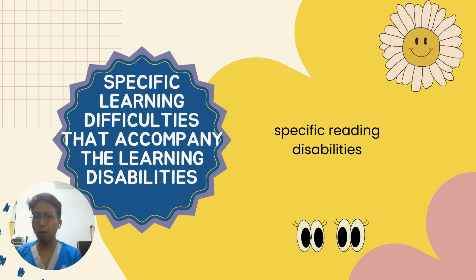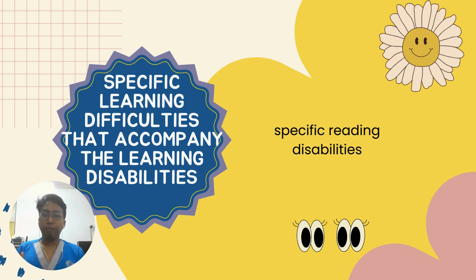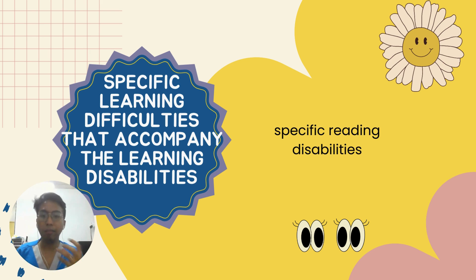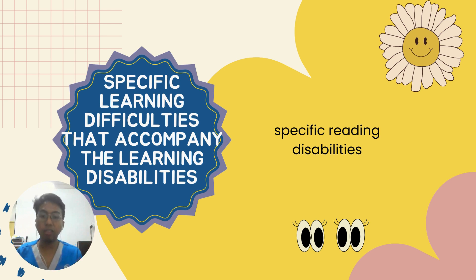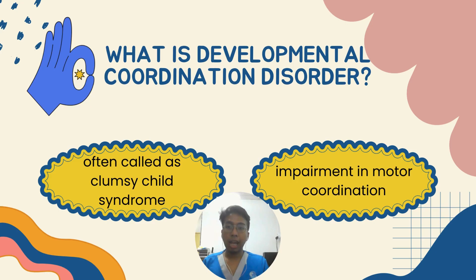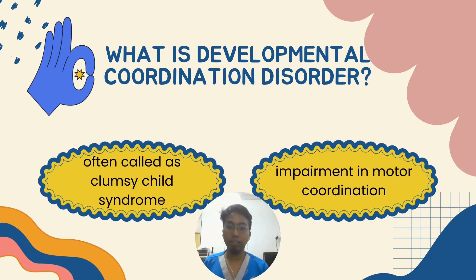Children with specific reading disabilities may have delays or difficulties reading sequences. For example, a sentence like 'I love to eat chicken' might be read out of order or with errors. Now let's talk about developmental coordination disorder, often called clumsy child syndrome.